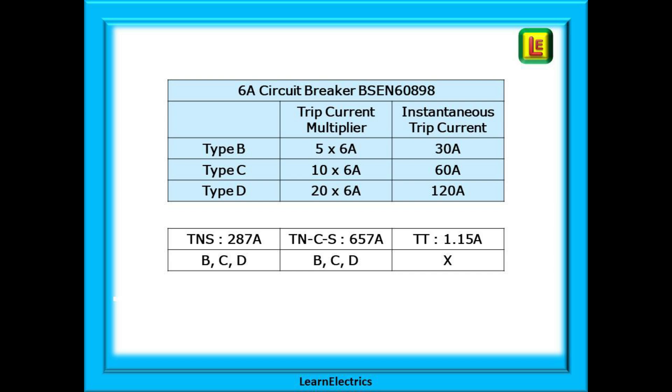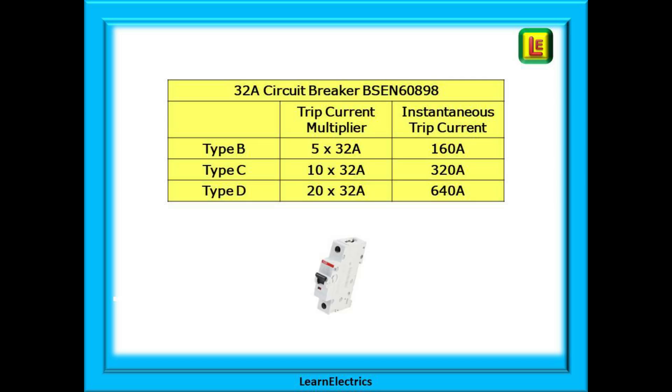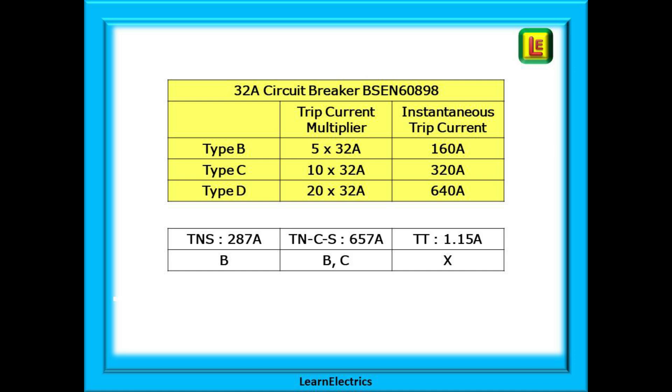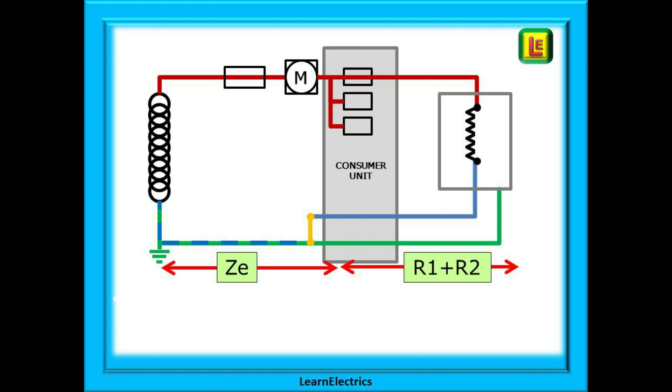Look now at a 32 amp MCB. It needs the same trip current multiplier 5, 10 and 20 times the rating but now the current is that much bigger. With the ZE maximum figures a TNS system at 287 amps will cause instant operation of the B32 breaker but not the C type or D type. For the TNCS system the fault current is sufficient to trip the B and C types in the required time but not the D type. And alas the TT system at 1.15 amps will never trip any of the breakers. To the TT system it's just another ordinary day.